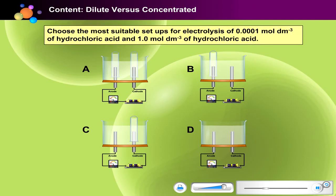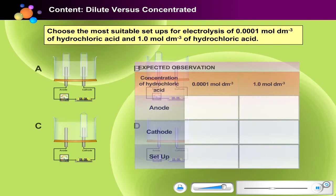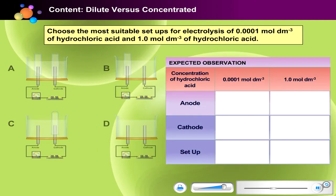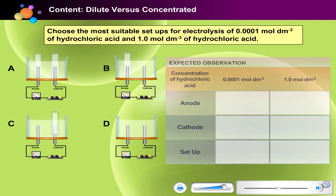Now, let's choose your setup. Which of these setups are suitable for the electrolysis of 0.0001 mol/dm³ and 1.0 mol/dm³ of hydrochloric acid? Before you make your choice, you must first be able to predict the observation. Fill up the observation table. Predict what will be observed at both anodes and cathodes. Use the two factors that you have learned to select ions to be discharged at the electrodes. Press Enter when you have finished filling in the table. Now, choose the correct setup for this investigation. Click the setup of your choice, then press Enter to check.